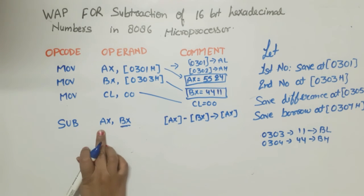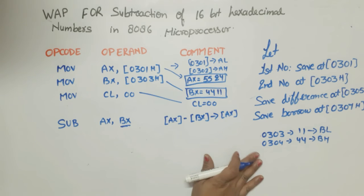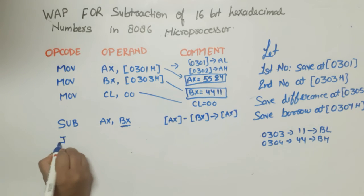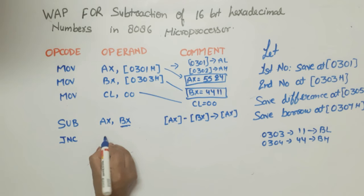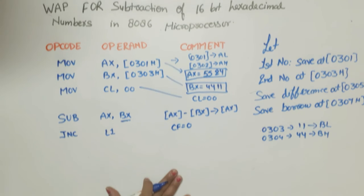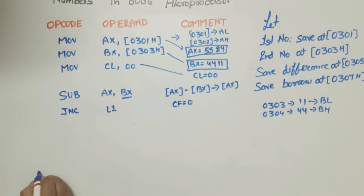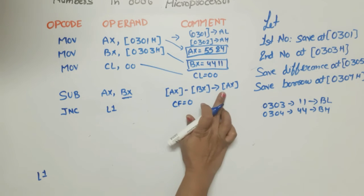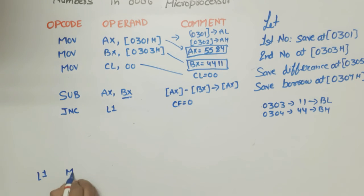Now after subtraction we will check is there any borrow. So we will write JNC loop 1, means that if CF is equal to 0 means that if carry does not generate then we will save the result. We will mention loop 1, result after subtraction is in AX.